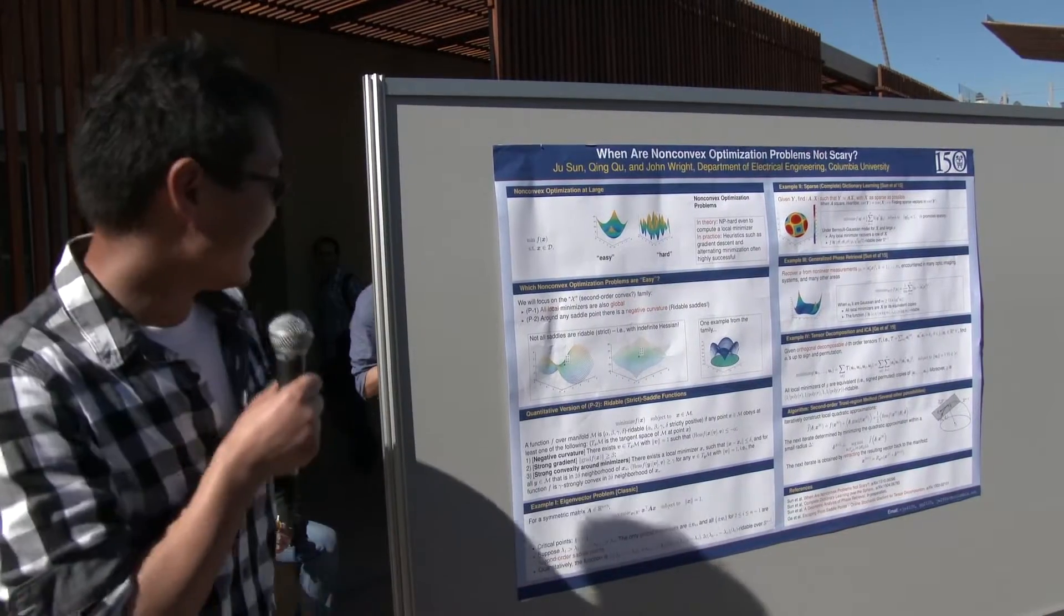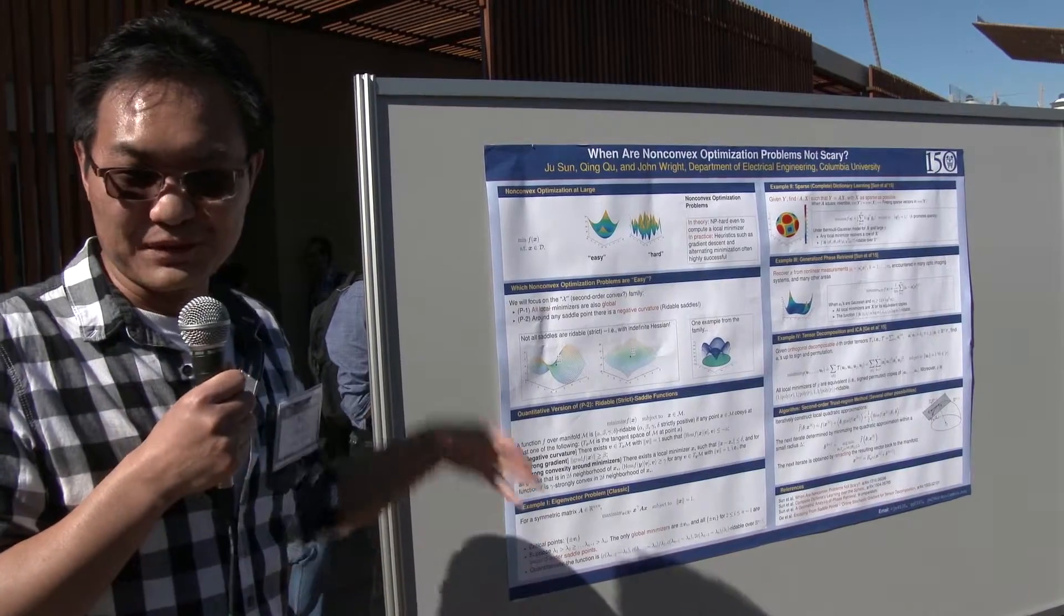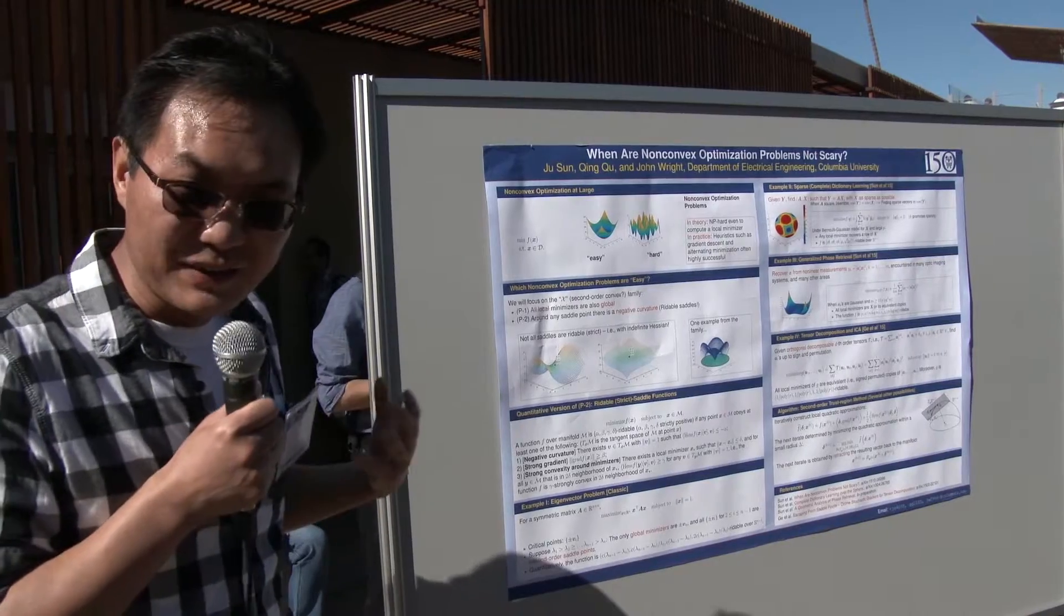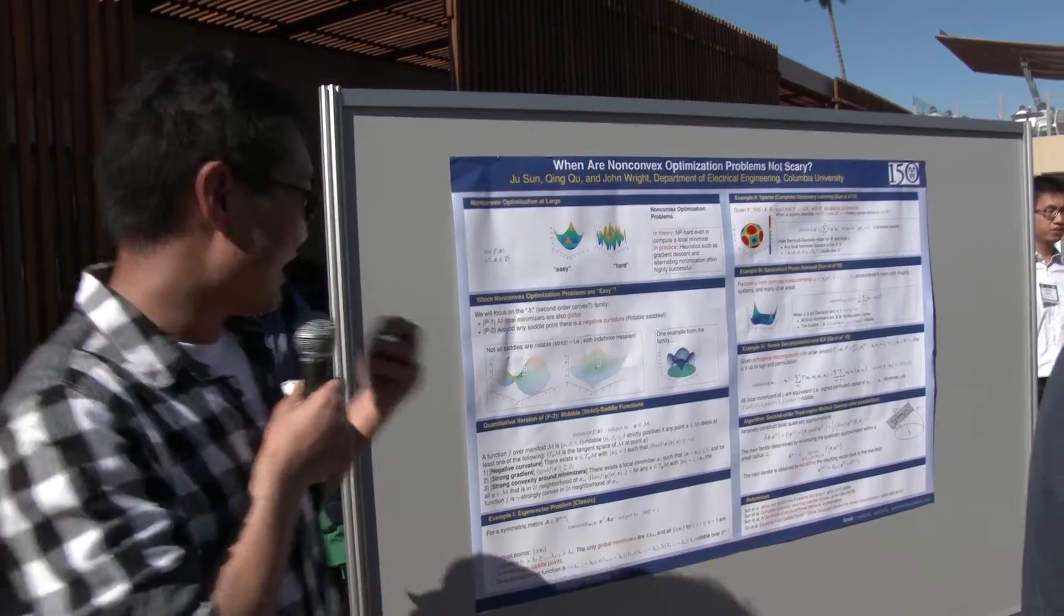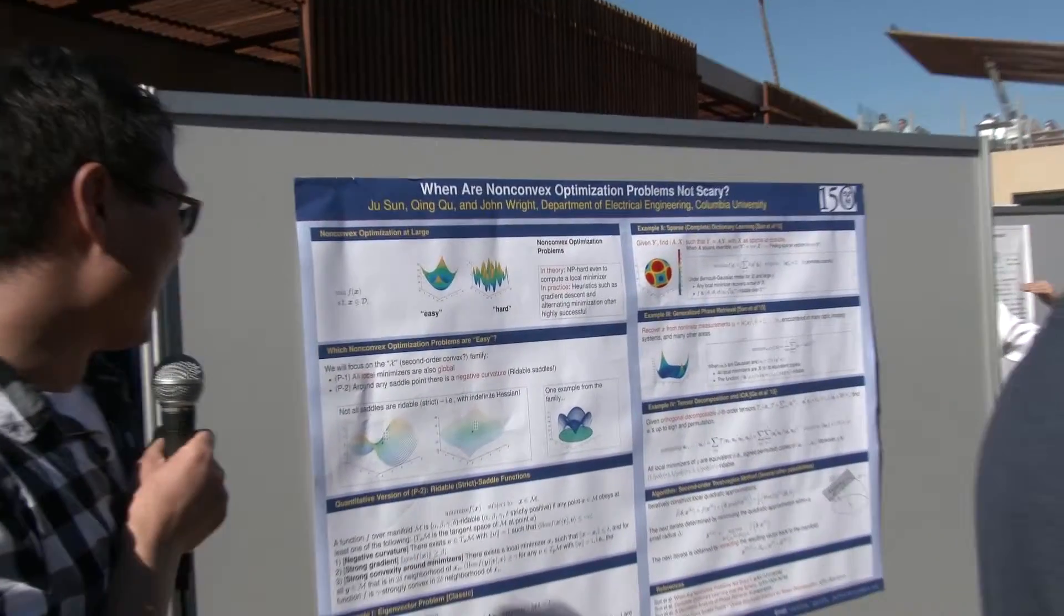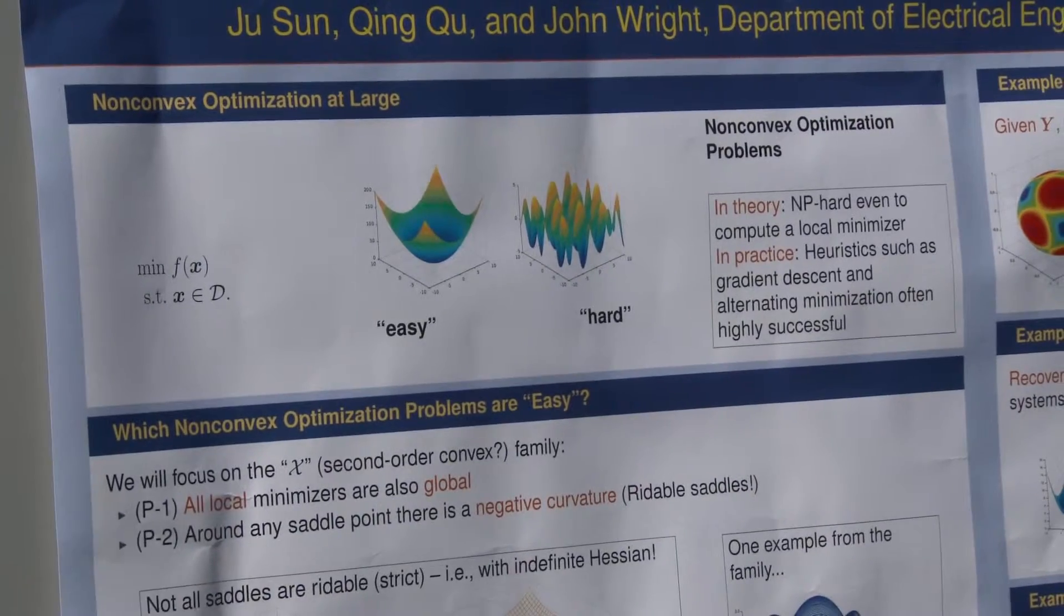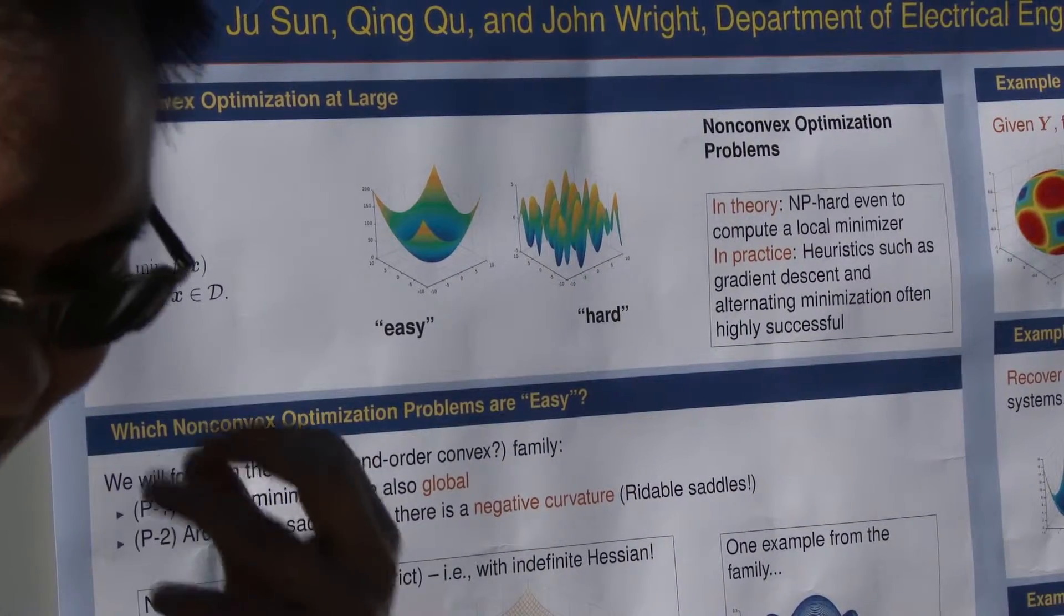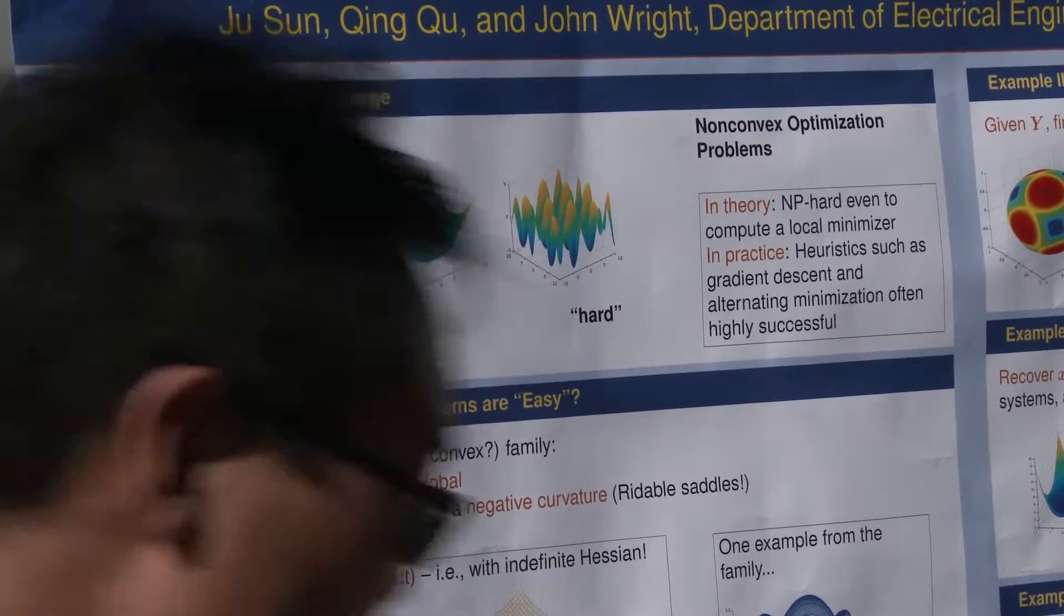I'm Zhu, and the poster I'm going to present is why non-convex, what kind of non-convex problems are not hard. We know in general non-convex problems are hard, at least in theory. But in practice, people work with different non-convex problems and they find that simple heuristic methods actually work well. In a sequence of work, we try to investigate what happens there.